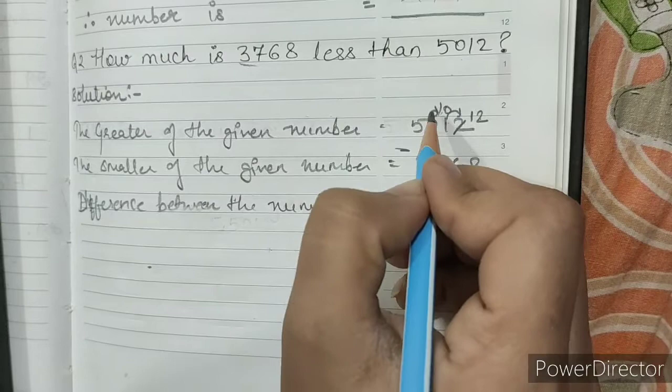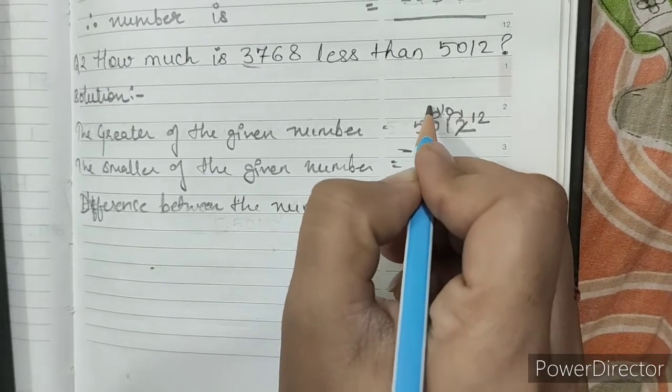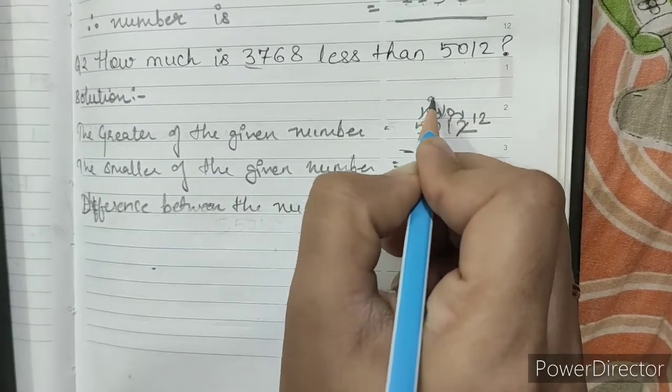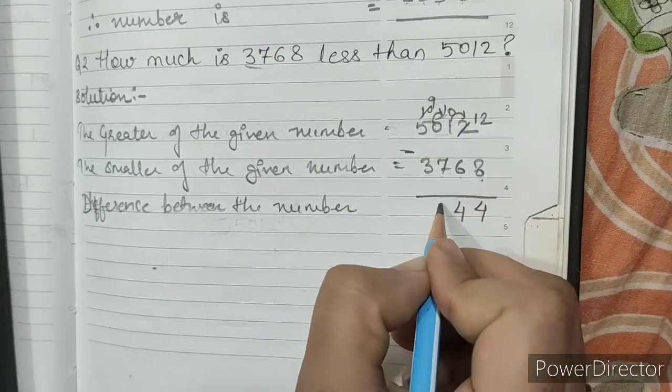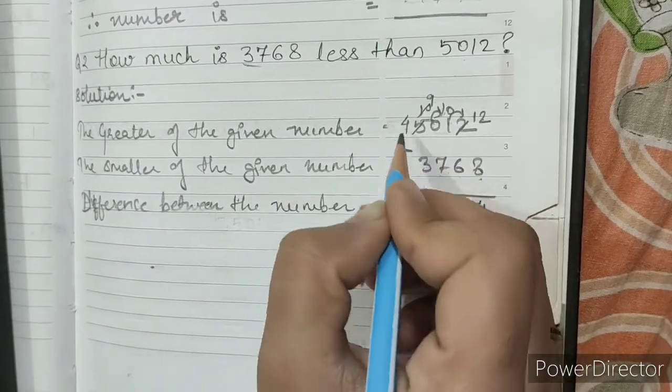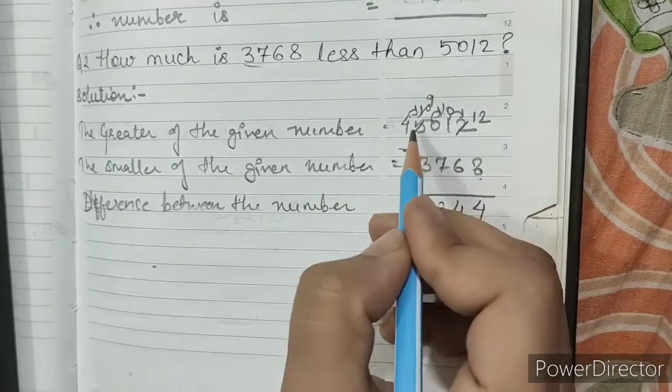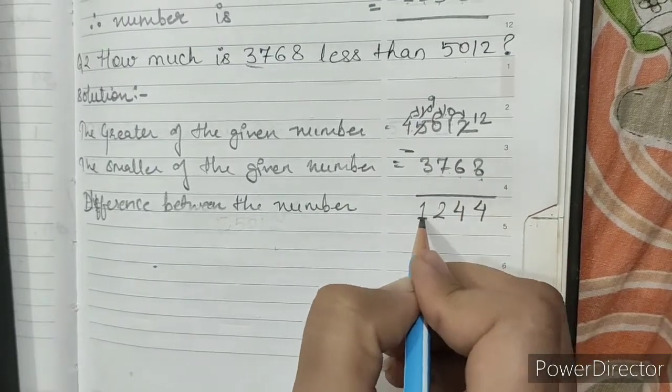Again, we will borrow from here. It will become... It was 10. It will become 9. 9 minus 7 is 2. And, it is 4. We have borrowed from here also. So, 4 minus 3 is 1.